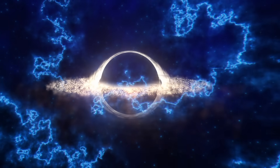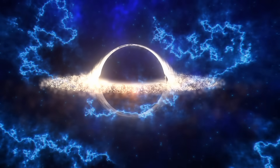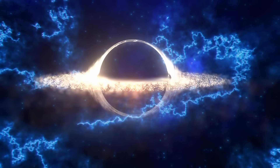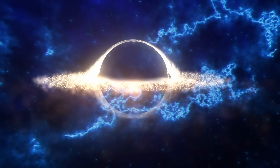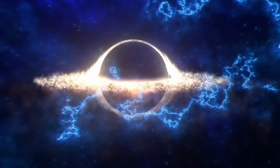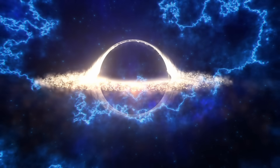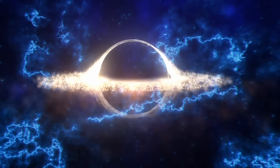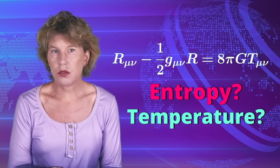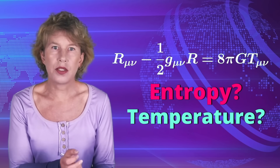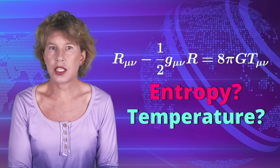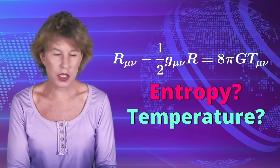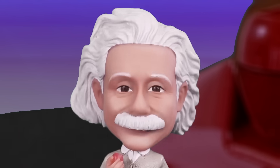That gravity is really caused by entropy sounds crazy at first, but the more you learn about gravity, the more plausible it becomes. Black holes, for example, can famously be described as thermodynamical objects with entropy and temperature. This is very perplexing because entropy and temperature really aren't quantities you expect to appear in Einstein's theory of general relativity, which is all about space, time and curvature and so on.